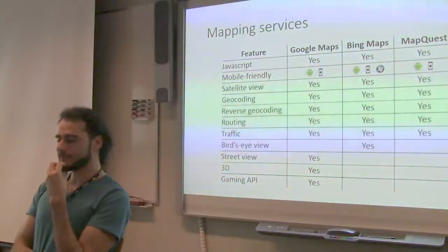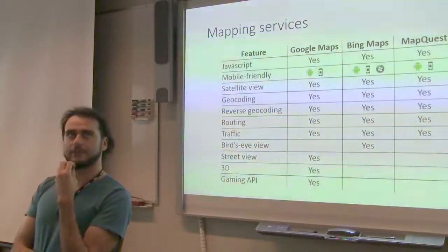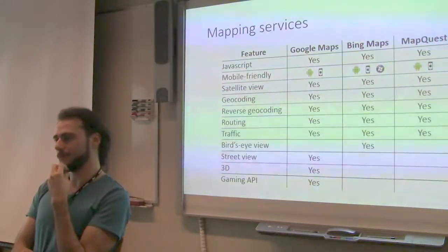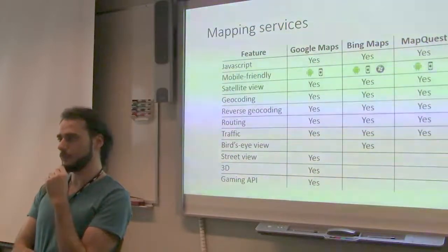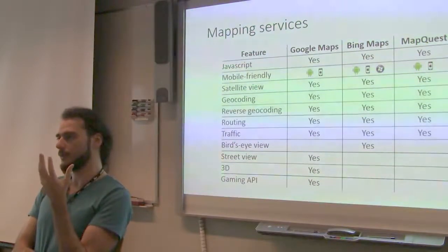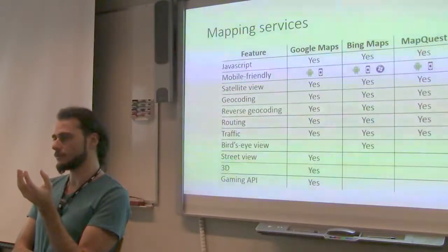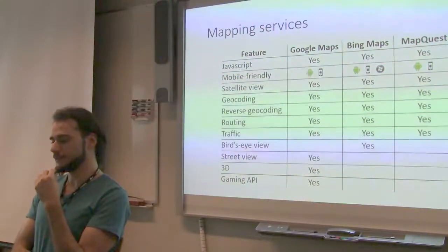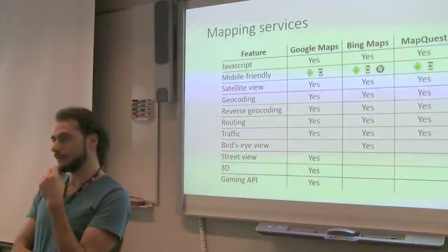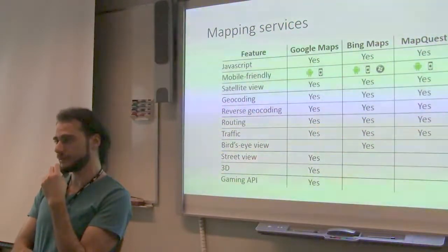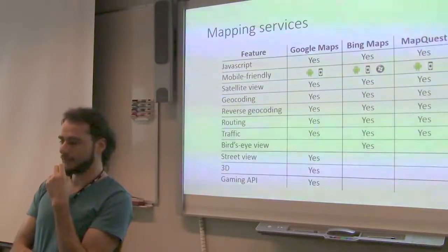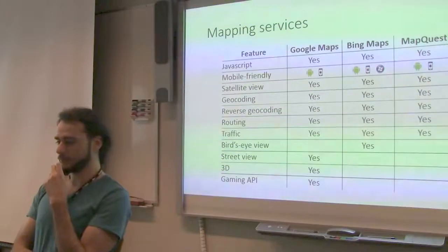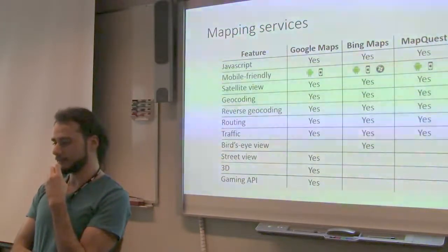Geocoding and reverse geocoding — this is something you use quite often. When you type something to search on the map, you usually type it by name; you don't enter coordinates. So if you want to search for Joensuu, the map system is going to find out the coordinates for Joensuu and display it on the map — this is called geocoding. Reverse geocoding is the opposite: you give it coordinates and it tells you what is at that location. These two features are available in all of these different platforms.